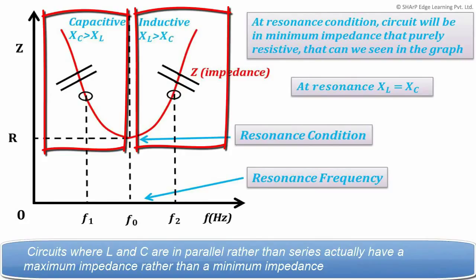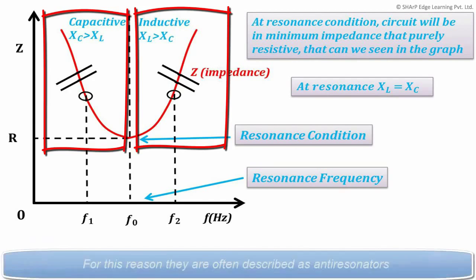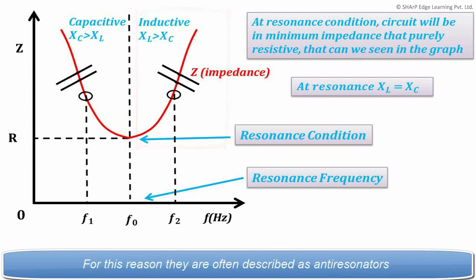Circuits where L and C are in parallel rather than series actually have a maximum impedance rather than a minimum impedance. For this reason, they are often described as anti-resonators.